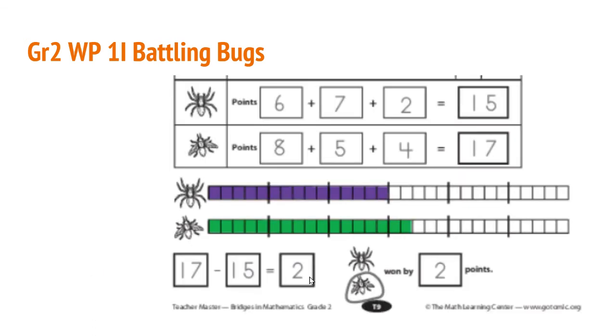And the last thing you're going to do is look to see the difference between the spider and the fly. Who had more points? In this case, it was the fly by 2. And you can see that by comparing your strips. So the fly won battling bugs by 2 points.